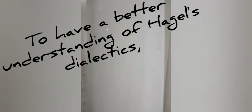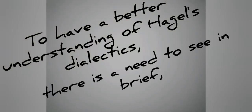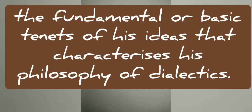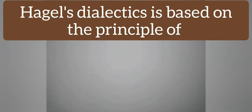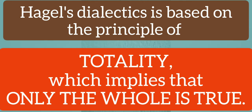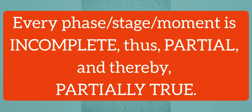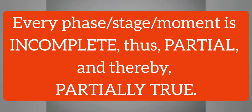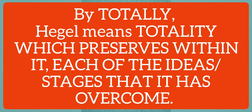To have a better understanding of Hegel's dialectics, there is a need to see in brief the fundamental or basic tenets of his ideas that characterize his philosophy of dialectics. Number 1: Hegel's dialectics is based on the principle of totality, which implies that only the whole is true. Every phase or stage or moment is incomplete, thus partial and thereby partially true.